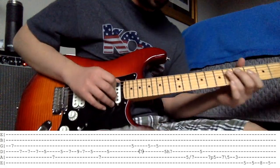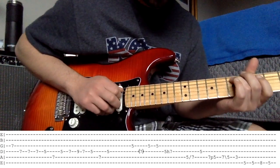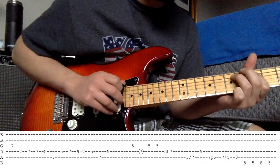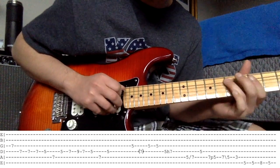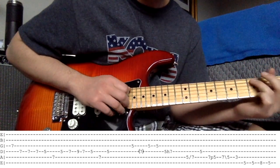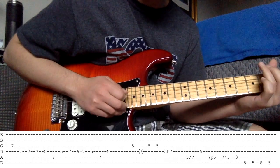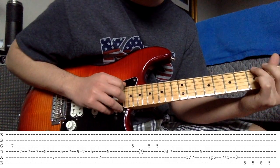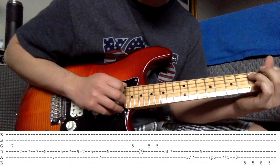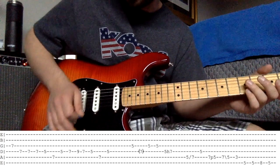Know what that is? It's a slide 5 to 7 on the A, 5 on the D, and then a pull off 7 to 5 on the A. Then a slide 7 to 5 on the A, 3 on the A, 5 on the E. So, I'll do it all the way from the beginning.